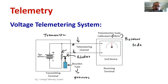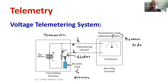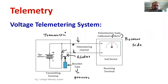With respect to any changes in the burden tube, any changes in the pressure that are directly connected with the burden tube, the information will be transmitted through the telemetry channel and will reach the receiving end side. At the receiving end side you can see a voltmeter calibrated in terms of pressure, giving the equivalent reading of pressure. The pressure information is transmitted from the sending side to the receiving side. This is exactly how the voltage telemetry system operates.